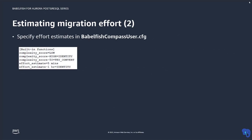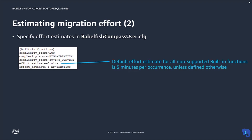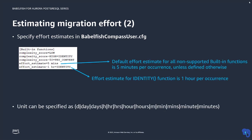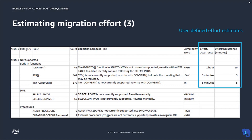Here you see an example of how to add effort estimates to the BabelfishCompassUser.cfg file. When you specify such estimates, you will see two additional columns in the spreadsheet. The first one reflects your estimate, and the second is the equivalent of your estimate but expressed as a number of minutes. You'll need to add your own calculations and formulas to process this further.